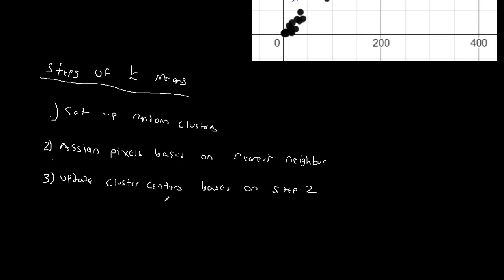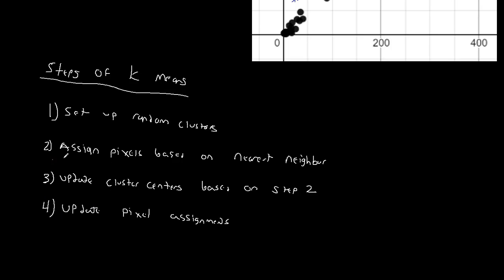Step three: you update cluster centers based on step two, so now you've moved the cluster centers. Step four: you update pixel assignments, because we've moved the cluster centers, and maybe now some pixels are closer to a different cluster center, so they would change their assignment. So we update the pixel assignments, and again, we'll go through a graphic example of this in the next video.